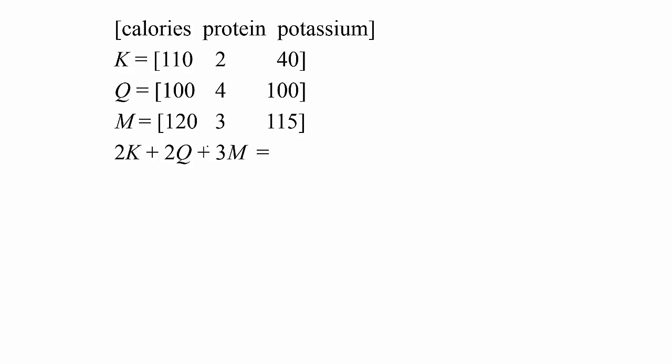If we have our matrices again and they ask us to find 2K plus 2Q plus 3M, we scale each matrix. 2K would be [220, 4, 80], and 2Q would be [200, 8, 200], and 3M would be 3 times 120, which is 360, 3 times 3 would be 9 grams of protein, and 3 times 115 would be 345.